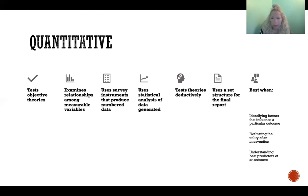Generally speaking, we tend to use quantitative methods when we're trying to identify factors that influence a particular outcome. So we might be looking to see if this variable causes this outcome or this interaction of variables causes this outcome.